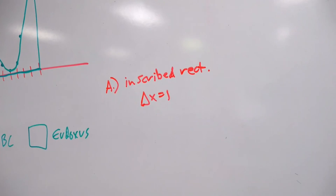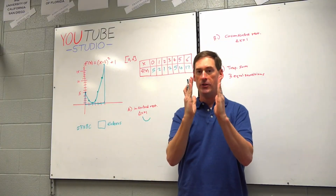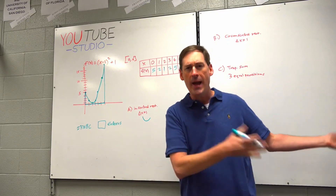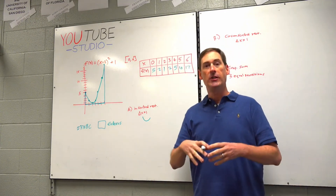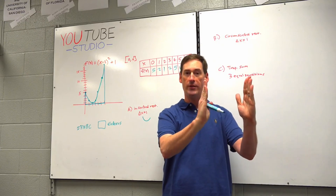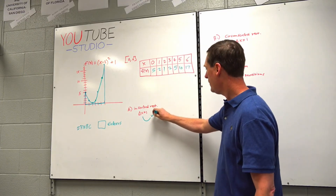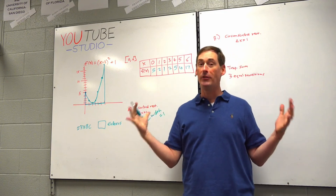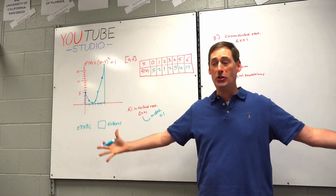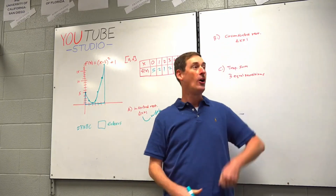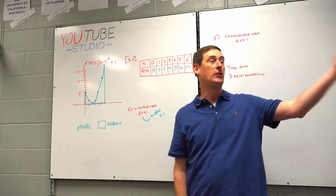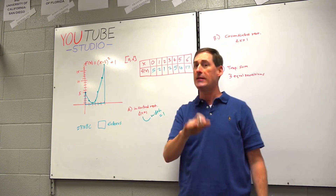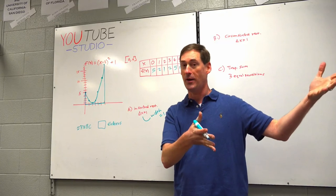Delta x equals 1 means the width is going to be 1. Normally for width we would say w or b for base, but in calculus they use the symbol delta x to measure the width of something. Later in the year, we'll have a mighty revelation about delta x where derivatives, integration, and limits all collide and come together and make sense. For now, just know that delta x equals 1.